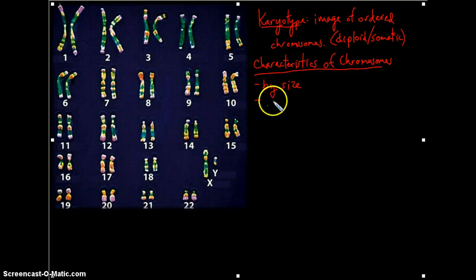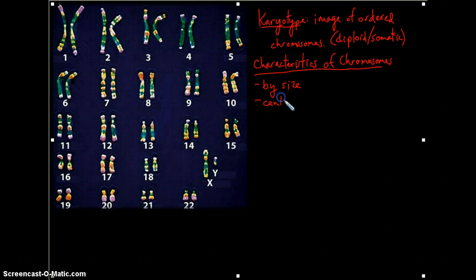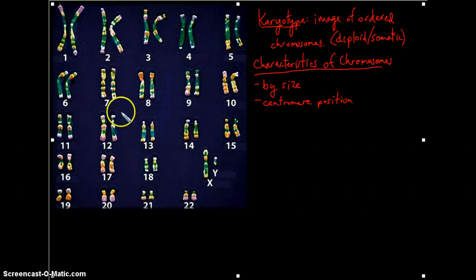They will also vary by their centromere position. So the little waist that we've talked about on these chromosomes can be more central, or they can be more distal toward one end or the other.